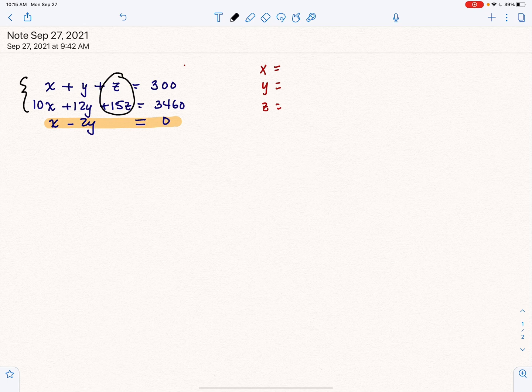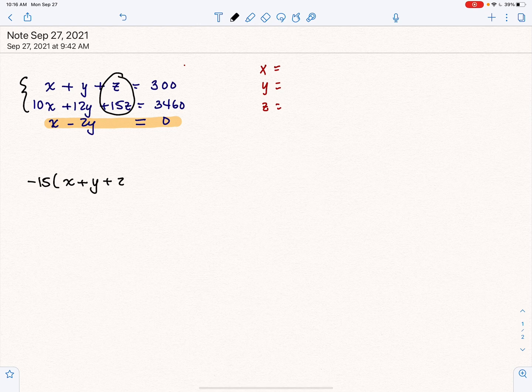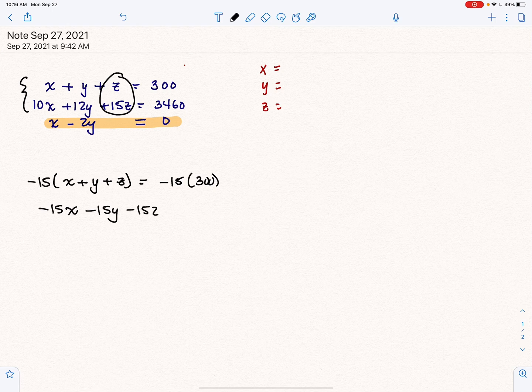So I'm going to take the first two equations and eliminate z. Now, what that means is I'm looking at those coefficients. I want to make sure that they cancel each other out when we add. So we're going to multiply the first equation by negative 15, which means multiplying both sides of the equation by negative 15.